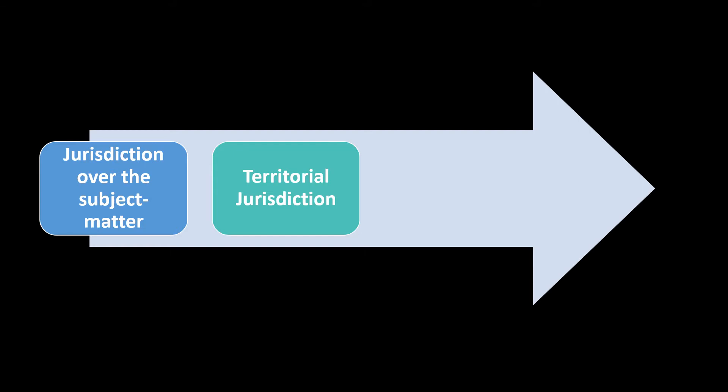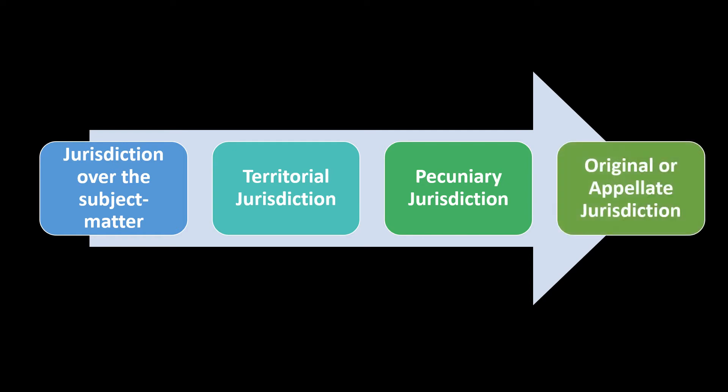Third is pecuniary jurisdiction — different courts have different limits to hear and try cases, and also to hear appeals of different amounts of value. Some of these courts have unlimited pecuniary jurisdiction. The fourth kind of jurisdiction is original or appellate jurisdiction, where the jurisdiction of a court may be original or appellate.